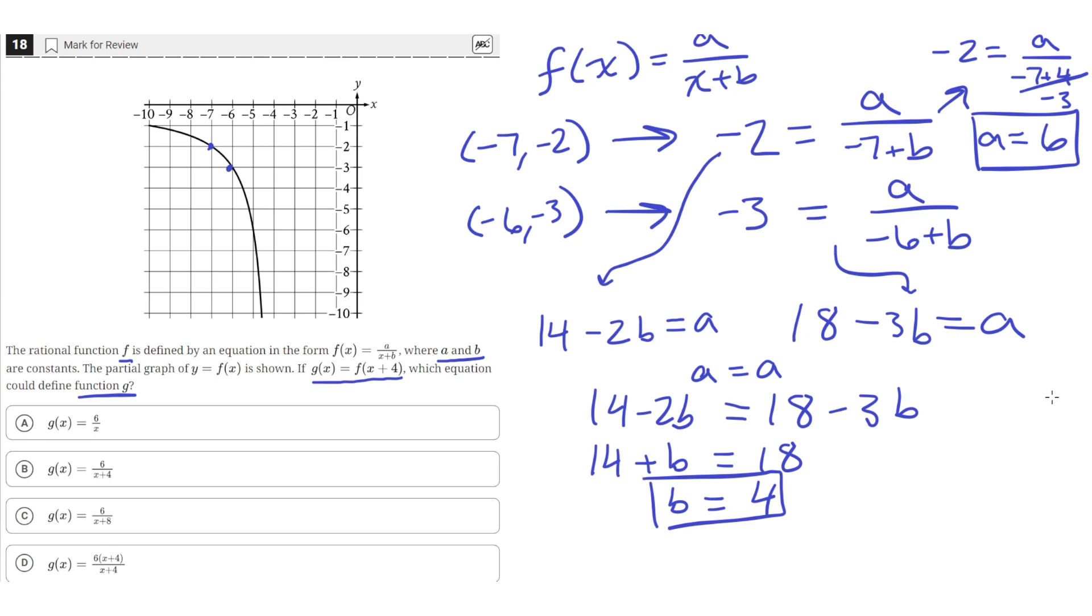Now we have the values of a and b. Our f(x) equation is going to look like a, which is 6, over x plus b, which is 4. So this is the value of our f(x) equation.